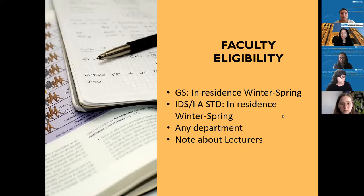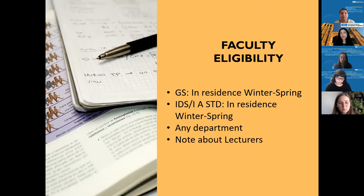Sometimes students won't know who's a lecturer. The way you'll know is if you go to the UCLA directory and type in their name — it will show if they're a professor, assistant professor, associate professor, or it will say lecturer. If it says lecturer, you have to verify they will be in residence. A lot of lecturers are visitors, so verify they're here during the time you're writing the thesis. Then email our office with their name and tell us why you're interested in this particular lecturer to advise you, and we'll go from there.